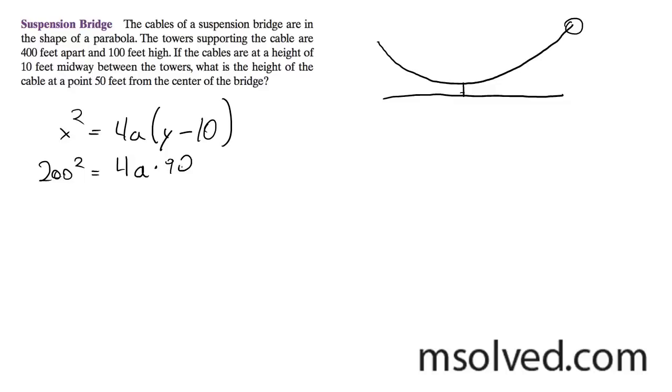So that ends up being 200 squared divided by 4 times 90, which is 360, is equal to a, and this ends up being equal to 111.111, just repeating.